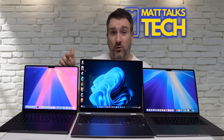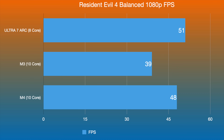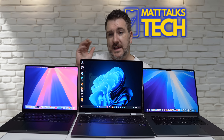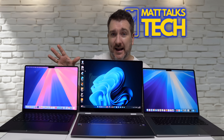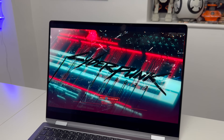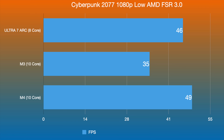For a game built natively for Apple Silicon, I tested Resident Evil 4 at balance settings, 1080p. The Ultra 7 Arc GPU got 51 FPS, the M3 got 39 FPS, and the M4 got 48 FPS — the Ultra 7 pulling ahead. I then ran two more games using CrossOver, which lets you run Windows games on Mac, starting with Cyberpunk 2077 at 1080p low with AMD FSR 3.0. The Ultra 7 got 46 FPS, M3 got 35 FPS, and M4 got 49 FPS.